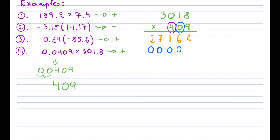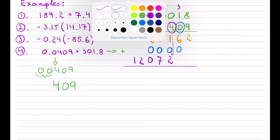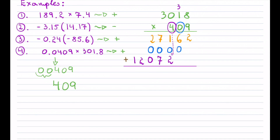Shifting over to the 4: 4 times 8 is 32, aligning under the correct place value; carry the 3; 4 times 1 plus 3; 4 times 0 is 0; 4 times 3 is 12. Now adding up: 2; 6; 1 plus 2 is 3; 7 plus 7 is 14, carry the 1; 1 plus 2 is 3; then 2 and 1.